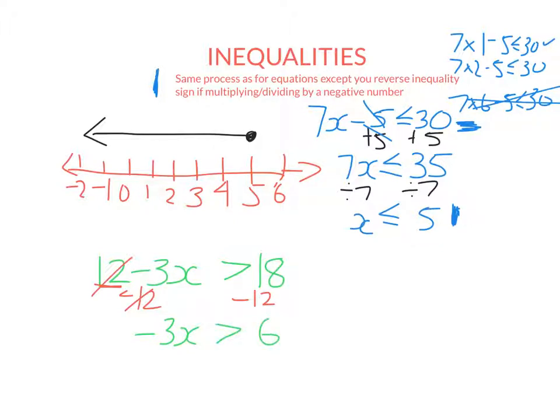Now, I want to get x by itself. It's being timesed by negative 3. So to undo that, I need to divide each side by negative 3. Now, because I'm dividing by a negative number, I need to reverse the inequality. So the negative 3s cancel out. I'm left with x, 6 divided by negative 3 is negative 2. But instead of greater than, it's going to point the other way. So the solution is actually x is less than minus 2.